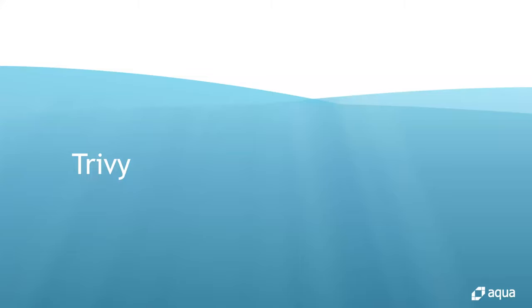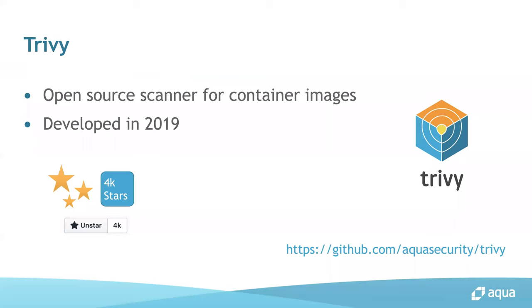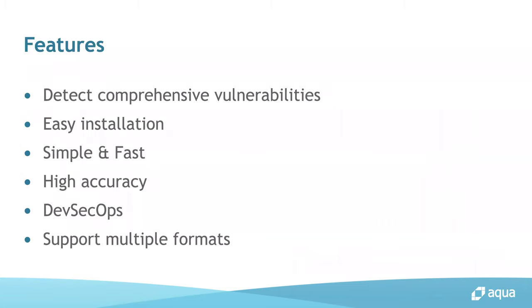Trivy is an open source scanner for container images. It is hosted under the Aqua Security organization and was developed in 2019 — so it's still a young project, about one year old. It has received 4,000 stars on GitHub so far. As you can see in the README, Trivy has six main features.